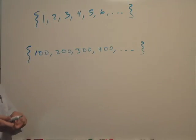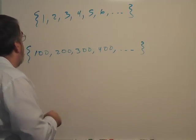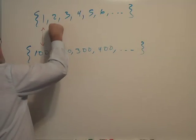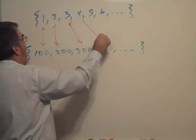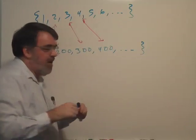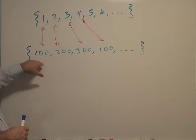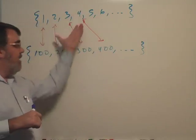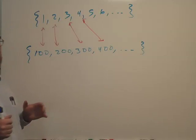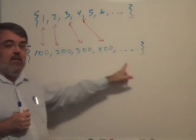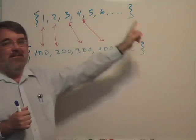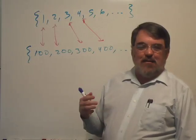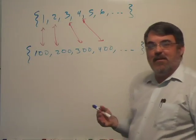This set is countable because I can match each counting number up with each object in a one-to-one relationship. This is called a one-to-one mapping. It shows that there are just as many multiples of 100 as there are whole numbers. You might recognize that as a variation of Galileo's paradox that I talked about in the second video of this series.